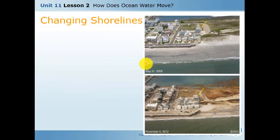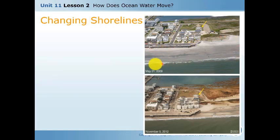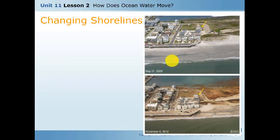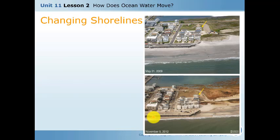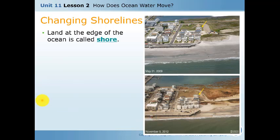Changing Shorelines — what is a shoreline? The shoreline is all this part of the beach. Looking at the picture, there is a lot of sand in one area and not much in another. The beach is losing land because the ocean takes the sand and moves it to another place. The land on the edges of the ocean is called the shore.